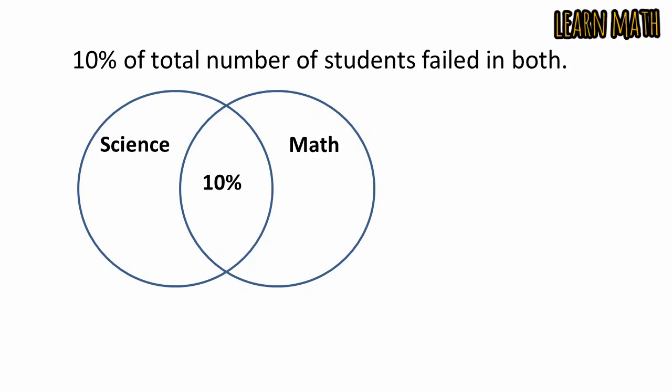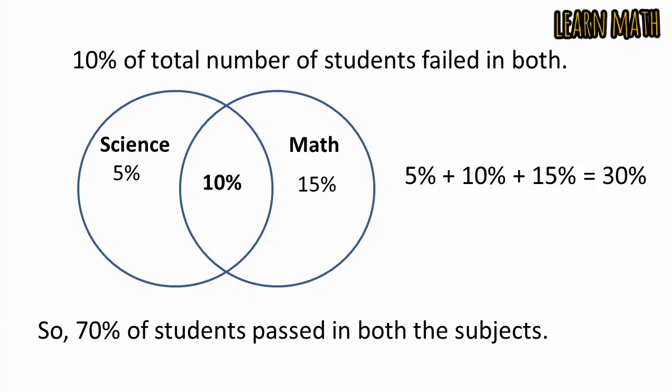So, in science, the remaining are 5% and then it will be total 25%. And in math, the remaining are 15%. So, then you will add these 5% plus 10% plus 15% and you will get 30%. So, the answer will be 70% of students passed in both the subjects. Thank you so much.